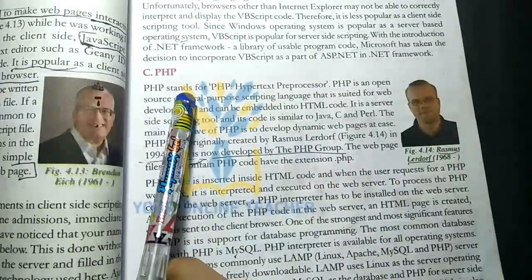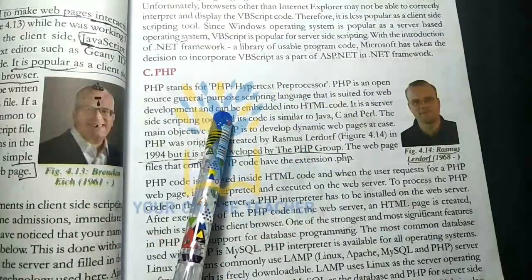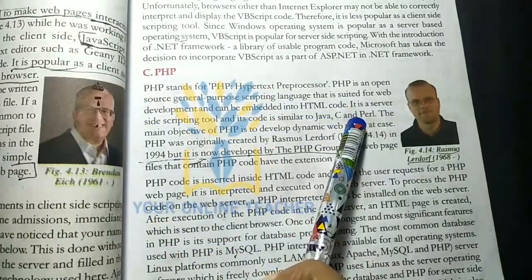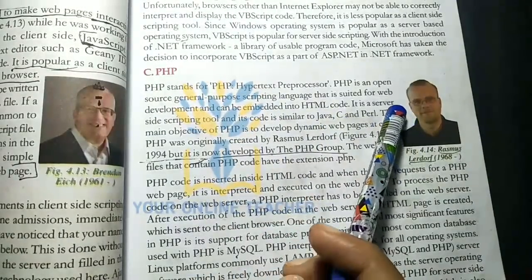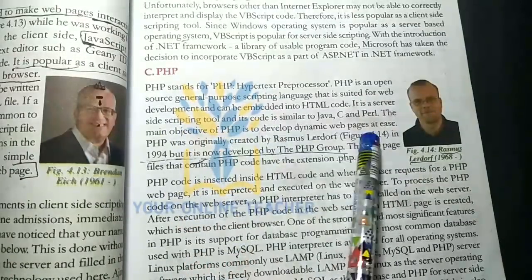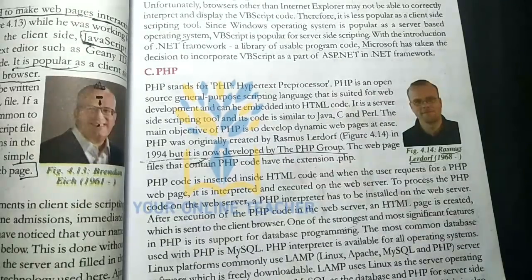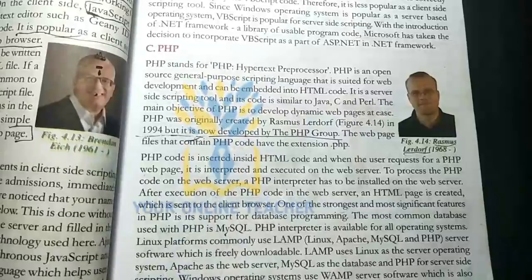Next is PHP, which stands for Hypertext Preprocessor. PHP is an open-source, general-purpose scripting language that is suitable for web development and can be embedded into HTML code. It is a server-side scripting tool, similar to Java, Perl, and C. The main objective of PHP is to create dynamic web pages. PHP was created by Rasmus Lerdorf and has since been further developed.